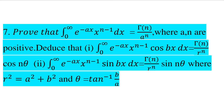Prove that integral from 0 to infinity of e raised to minus ax times x raised to n minus 1 dx equals gamma n by a raised to n, where a and n are positive. Also prove that the integral from 0 to infinity of e raised to minus ax times x raised to n minus 1 times cos bx dx equals gamma n by r raised to n times cos n theta, and integral from 0 to infinity of e raised to minus ax times x raised to n minus 1 times sin bx dx equals gamma n by r raised to n times sin n theta, where r squared equals a squared plus b squared and theta equals tan inverse b by a.